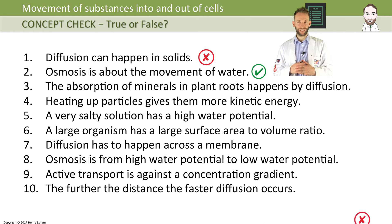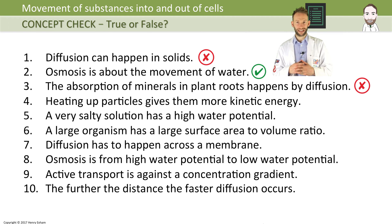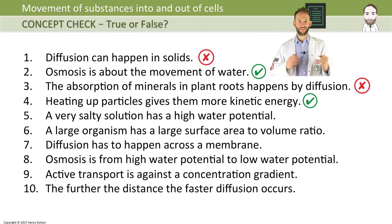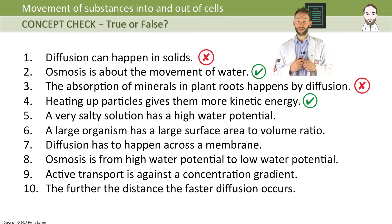The absorption of minerals in plant roots happens by diffusion — that is false, it happens by active transport. Heating up particles gives them more kinetic energy — that is true. When you heat up particles they move around more, and if they move around more they will diffuse quicker.